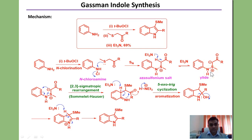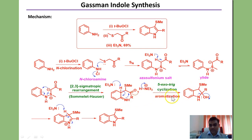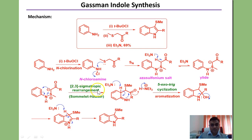This sulfur ylide undergoes a very crucial pericyclic pathway called a 2,3-sigmatropic rearrangement, also known as the Sommelet-Hauser rearrangement. Through this 2,3-sigmatropic rearrangement, a carbon-carbon bond is established and the nitrogen-sulfur bond is cleaved. In the subsequent transformation, aromatization and cyclization — a 5-exo-trig cyclization — occur to form the indole derivative. This undergoes dehydration to form the 3-thioalkoxy indole molecule. The success of this reaction is due to the sulfur ylide formation and its characteristic 2,3-sigmatropic rearrangement.